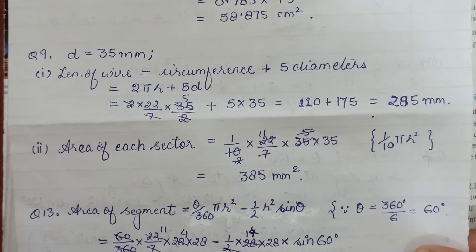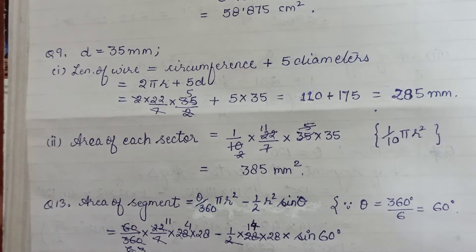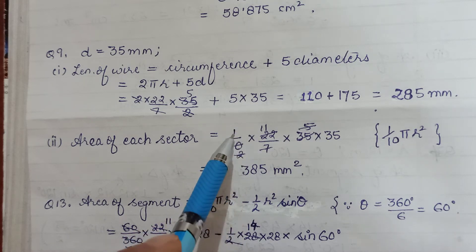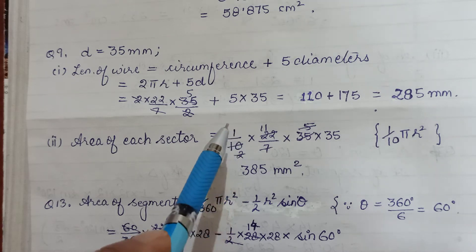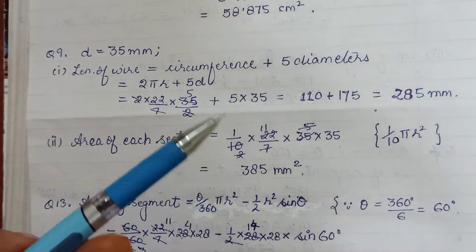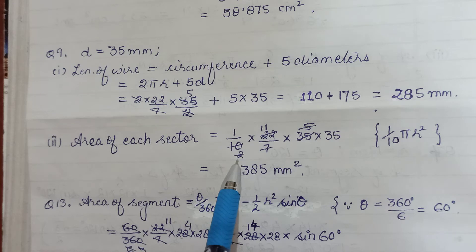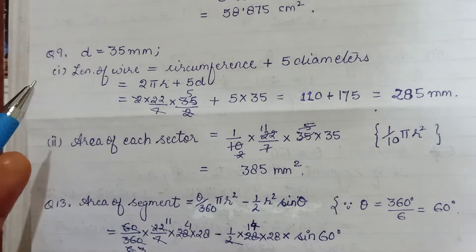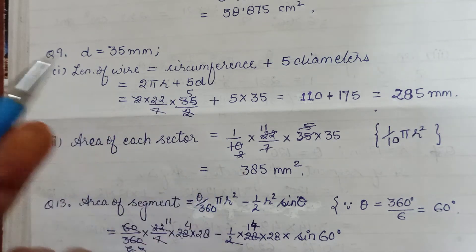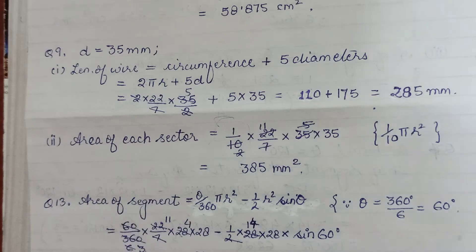They asked for area of each sector. Total 10 sectors hai, so the whole circle is divided into 10 equal parts. Area of one sector would be 1/10. If it was segment, you'd have to find angle because there sin θ is used, but for sector you can directly do 1/10. Otherwise angle of each sector would have been 360/10 = 36°, and 36/360 reduces to 1/10 anyway, so we've written 1/10 straight away.